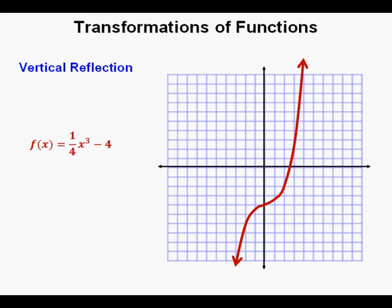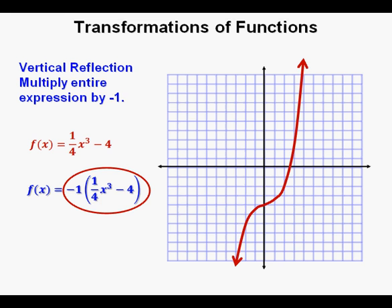Now we're going to look at a vertical reflection. For a vertical reflection, we take the entire expression on the right side — 1 fourth x cubed minus 4 — and multiply the whole expression by negative 1. Instead of writing negative 1, you could just put a negative sign on the outside, but keeping the 1 there reminds us it's negative 1 times what's inside parentheses.